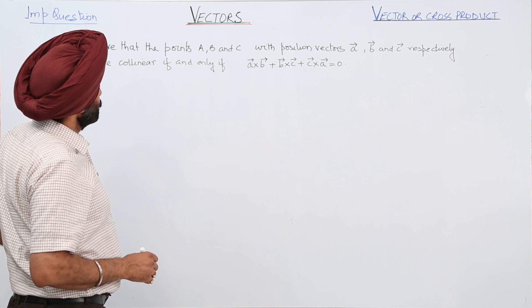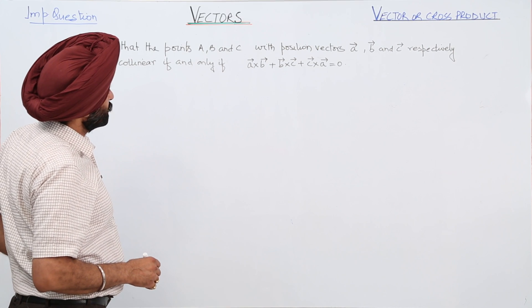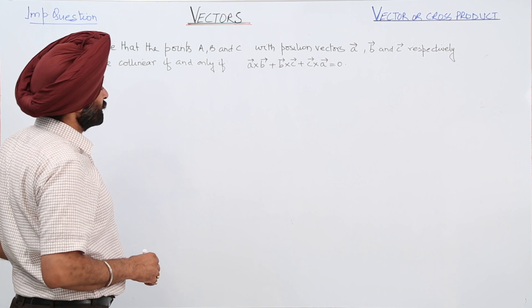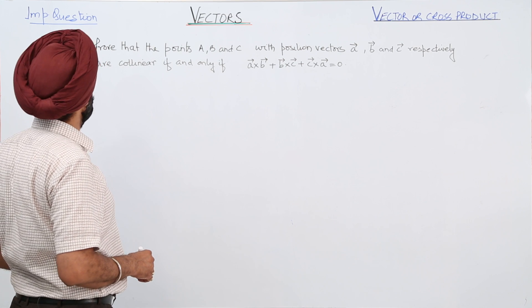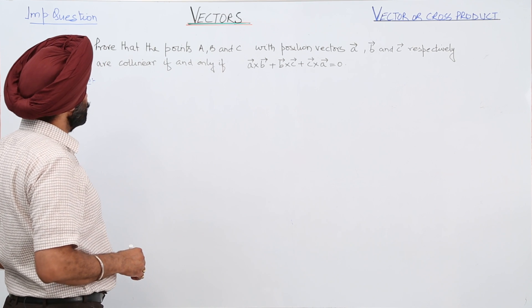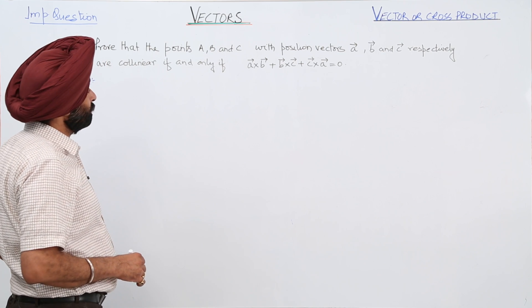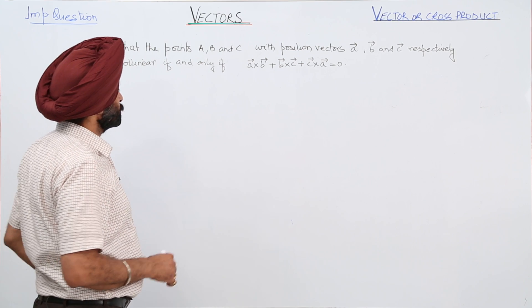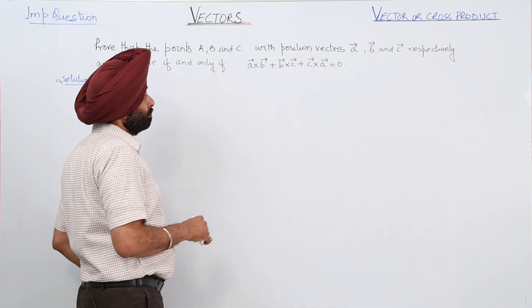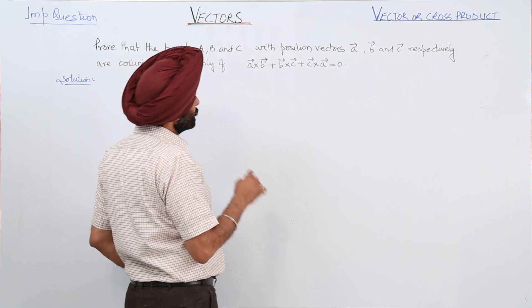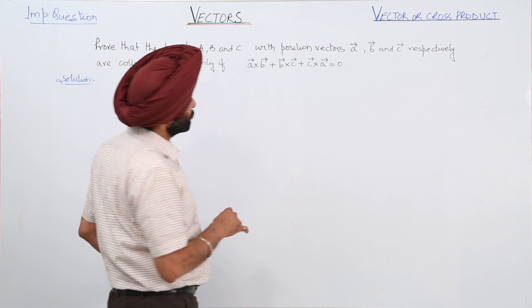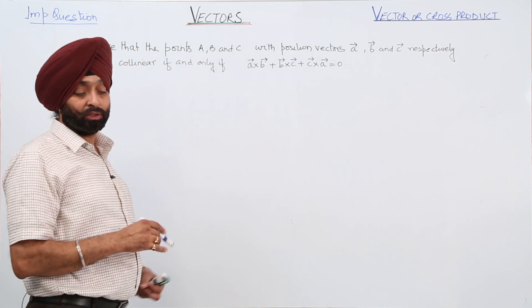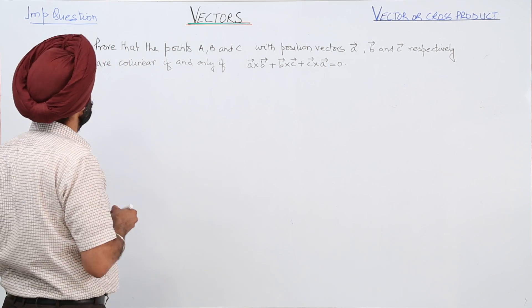Prove that the points A, B and C with position vectors vector A, vector B and vector C respectively are collinear if and only if the cross product of A, B plus cross product of B, C plus cross product of C, A is equal to zero.